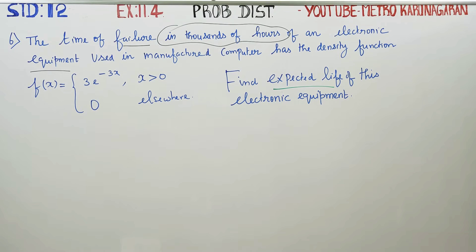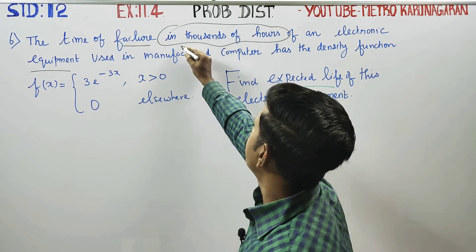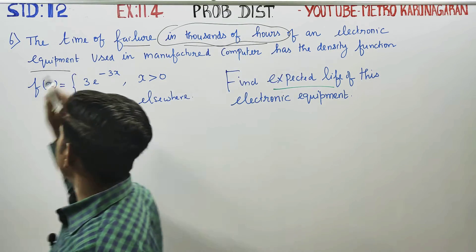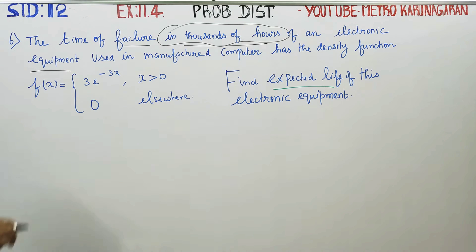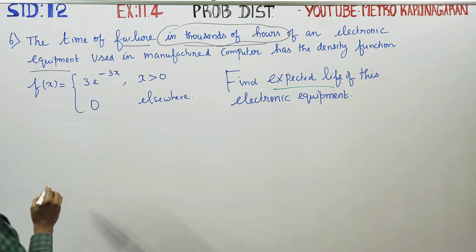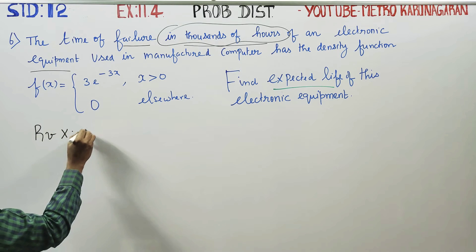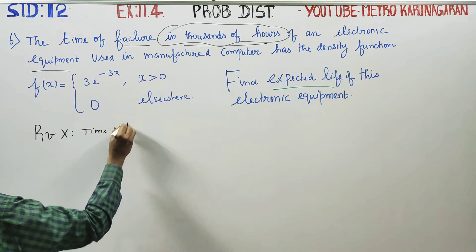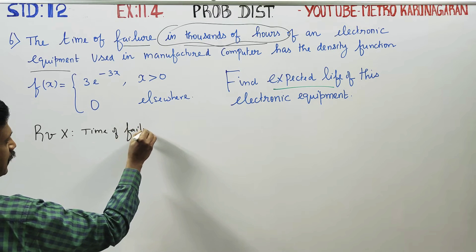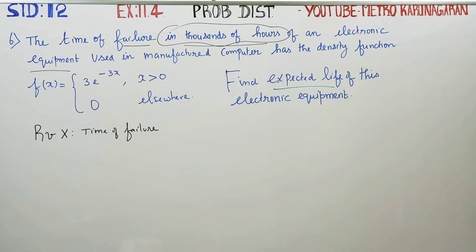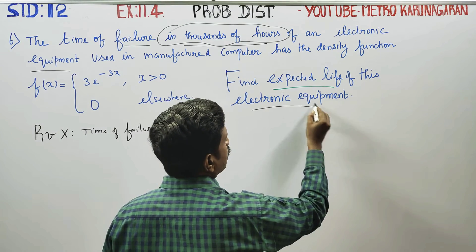Dear 12th standard students, in exercise number 11.4, sum number 6, it is given that the time of failure in thousands of hours of an electronic equipment used in a manufactured computer has a density function. We need to find the expected life of the electronic equipment.